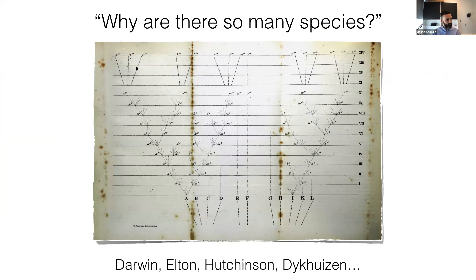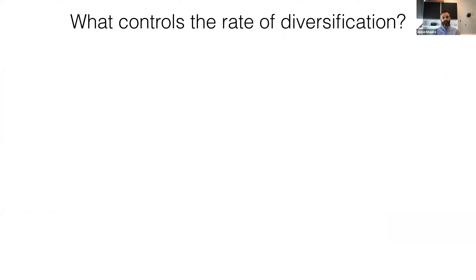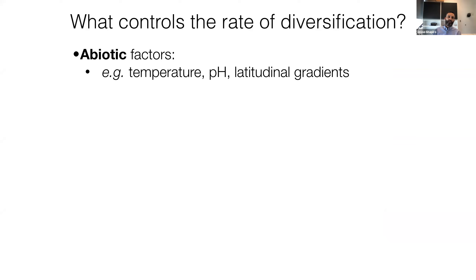A more formal way of posing this question is: what controls the rate of diversification or speciation? We can think about abiotic factors — things like temperature, latitudinal gradients, pH. We know that there are more species and more speciation presumably near the equator and the tropics, so there can be these abiotic drivers or limiting factors of speciation.